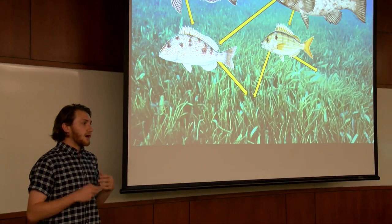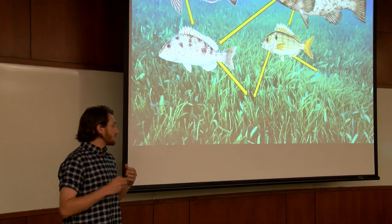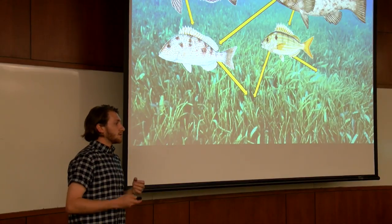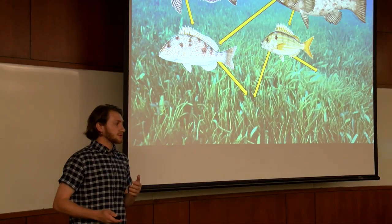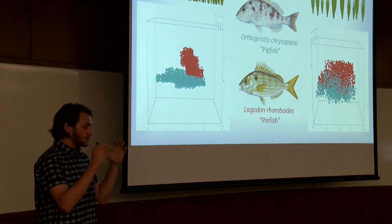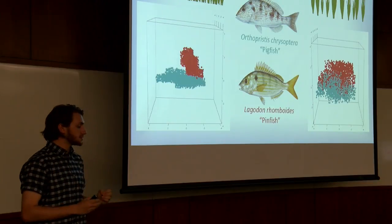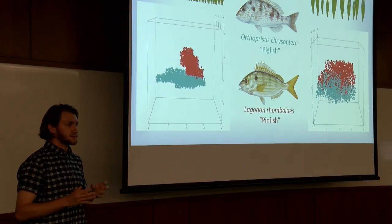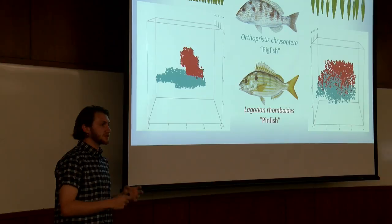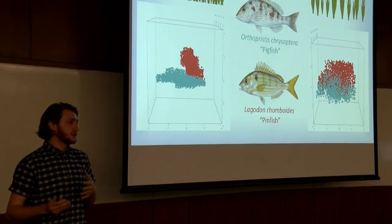For my PhD, I'm working on developing a new method to understand the functional niche of species in ecosystems using the food resources available to them. By creating a food resource space, we can understand how species exist in that space, how that space of a particular species compares to other species in that habitat, and how that compares across gradients.